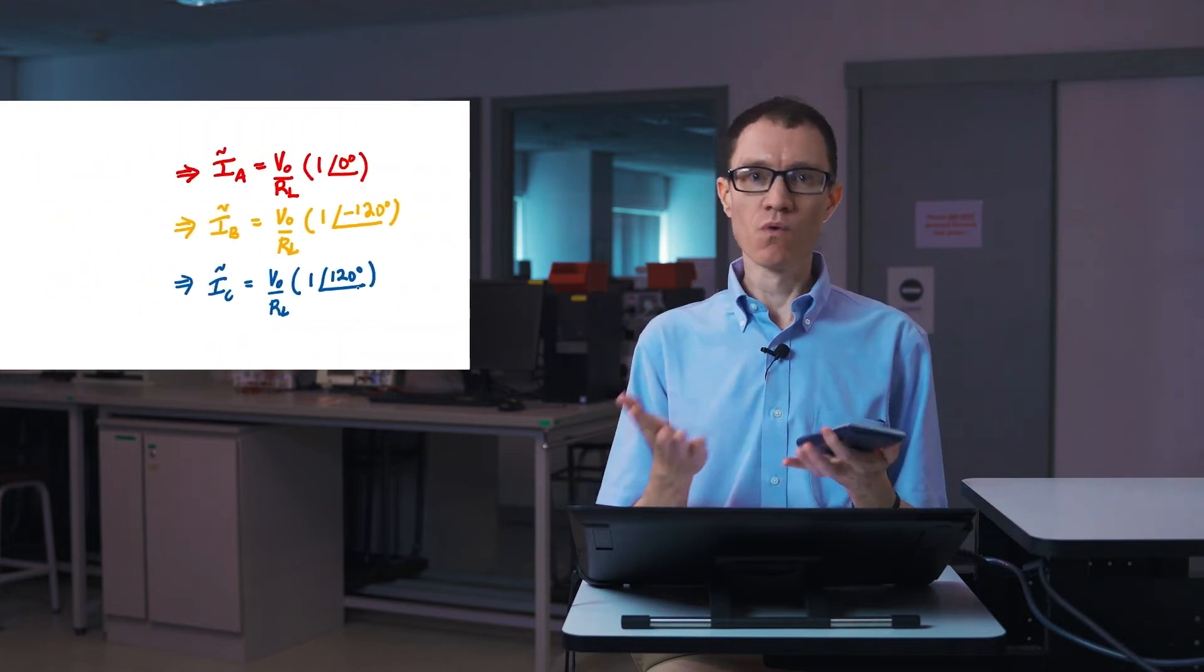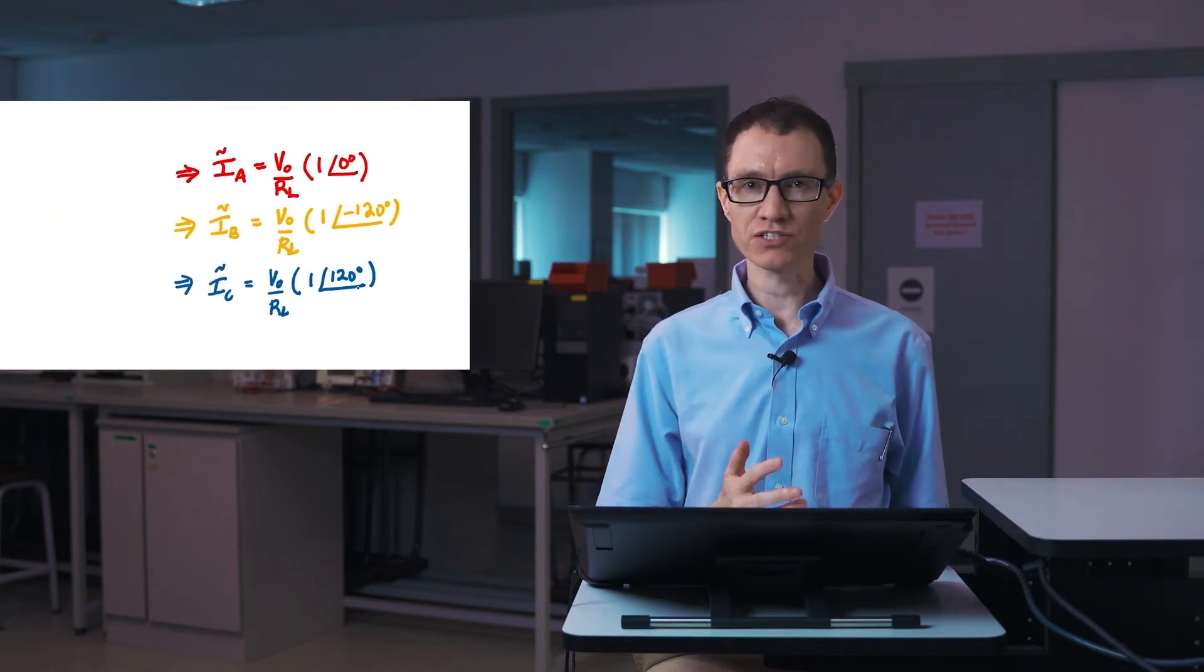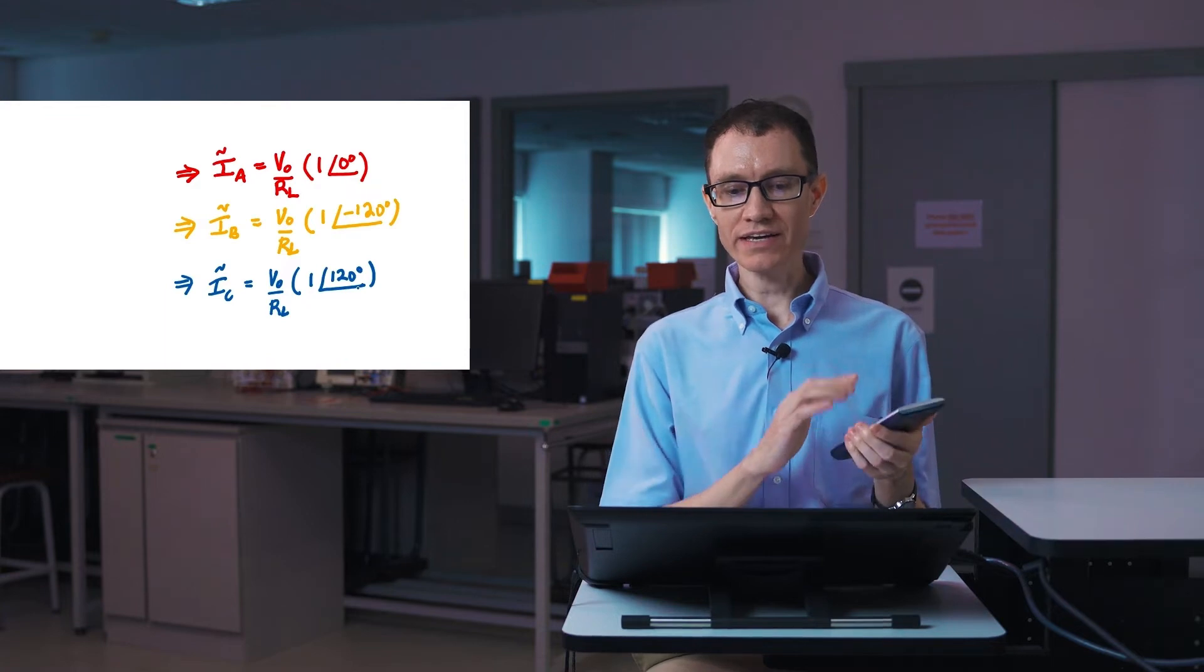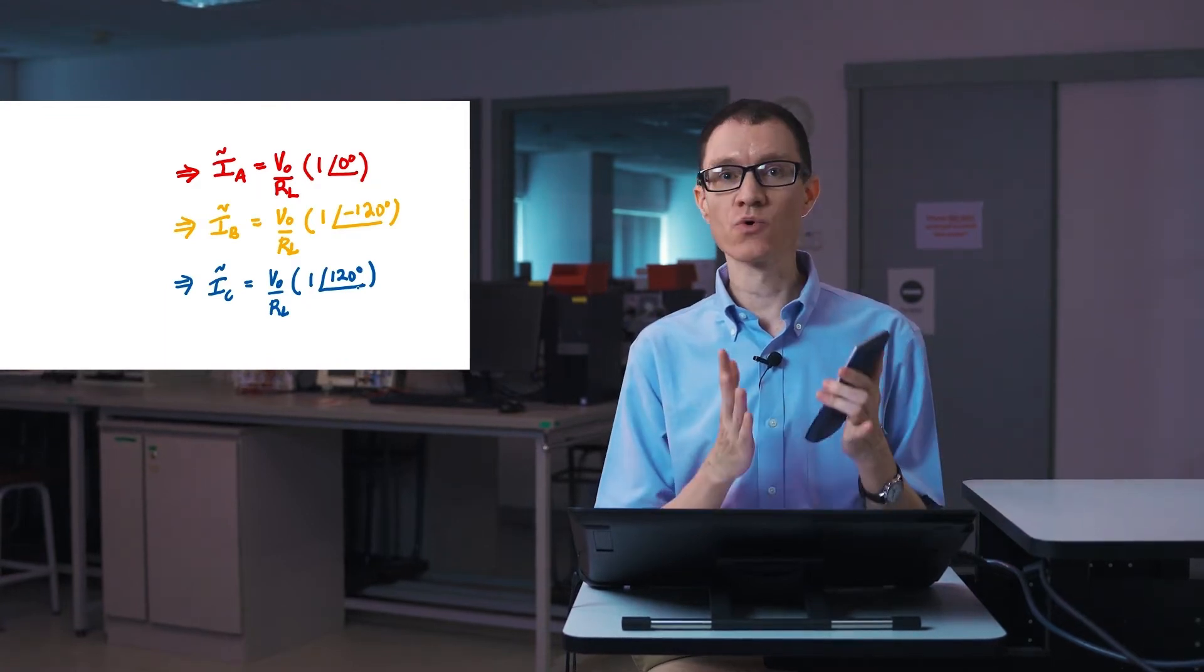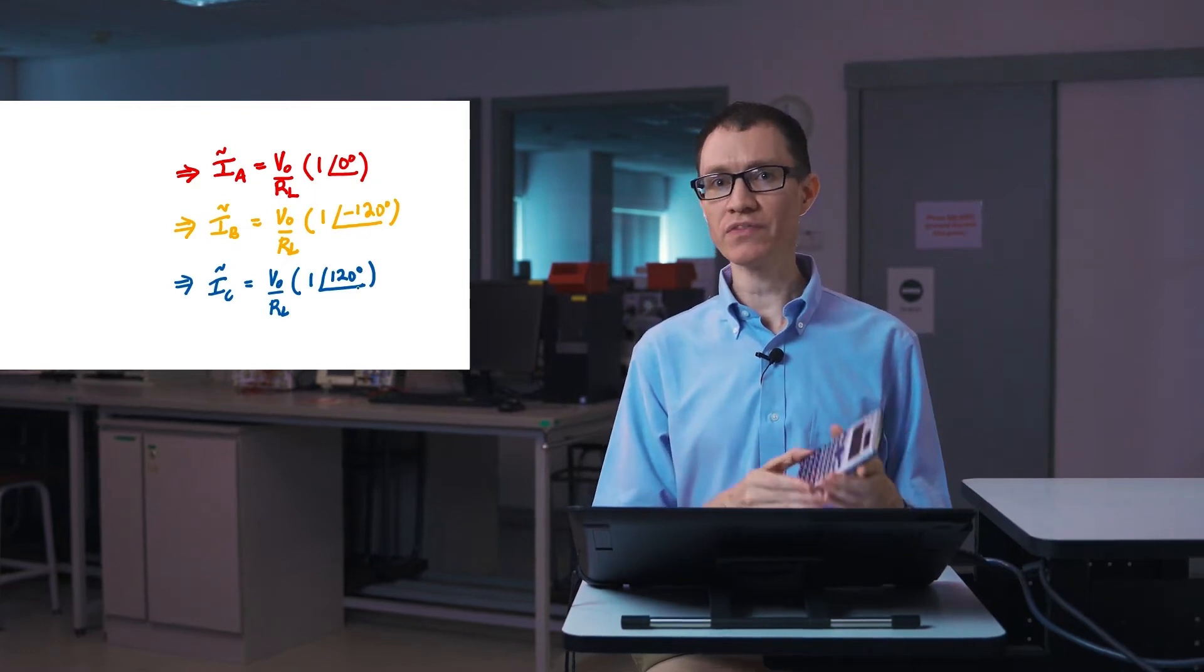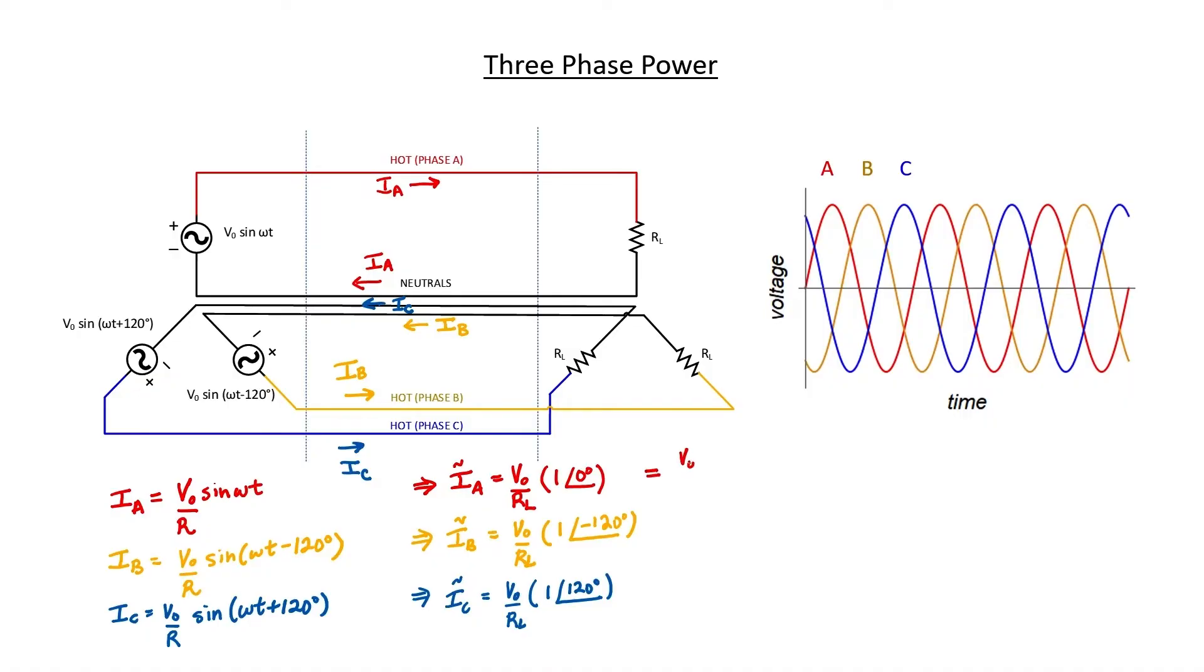For example, for the first number, one angle of zero, I know that that's just one. But the second number, I could key in one minus 120 degrees as an ordered pair in polar form and then use a pocket calculator like this to convert it to rectangular form. One at an angle of minus 120 degrees in rectangular form is minus one half minus square root of three over two times J. We get something very similar for phase C. If you don't have a pocket calculator with you, you can also convert these manually. Let me remind you how to do that.